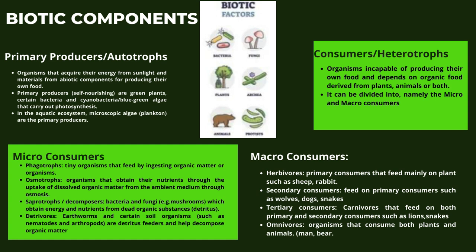Next let us look at the macro consumers. Herbivores are the primary consumers that feed mainly on plants, such as sheep and rabbit. Secondary consumers feed on primary consumers, such as wolves and dogs. Tertiary consumers are carnivores that feed on both primary and secondary consumers, such as lions and snakes. Finally, omnivores are organisms that consume both plants and animals, such as humans and bears.